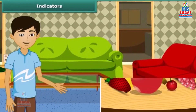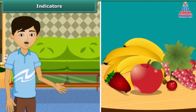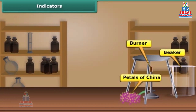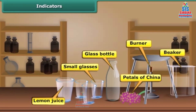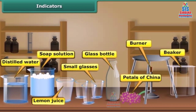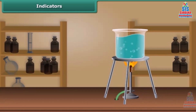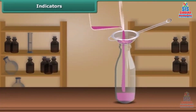How can you find that a fruit is acidic or basic? You can easily test the acidic or basic nature of a substance by making a simple indicator solution at home. You will need a beaker, gas stove, petals of China rose, a clean glass bottle, three small glasses, lemon juice, soap solution, and distilled water. Pour some distilled water in a beaker and heat it on the gas stove until warm. Then add petals of China rose and keep the mixture for some time until the water becomes colored. Filter this purple-red water into a bottle using a tea strainer.